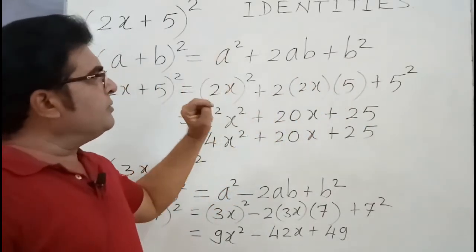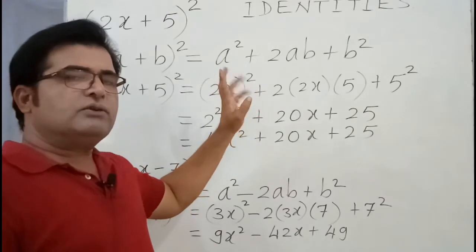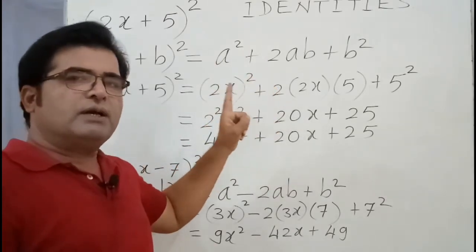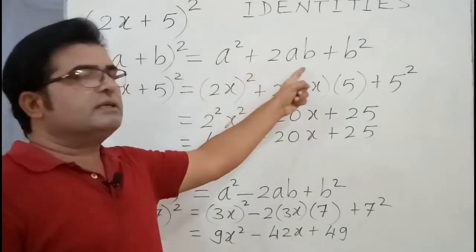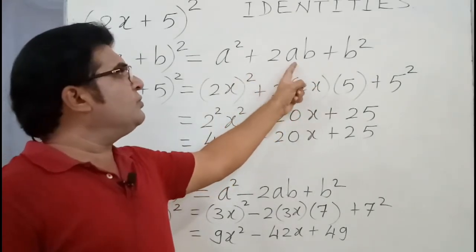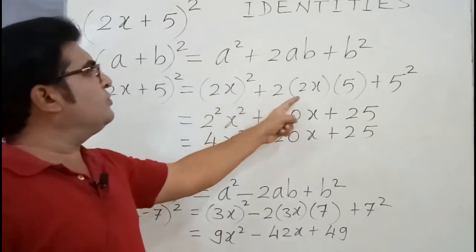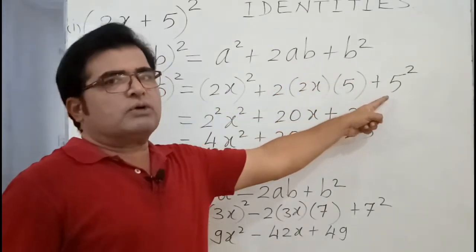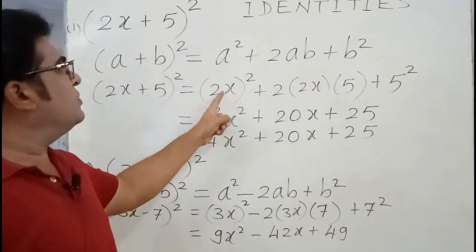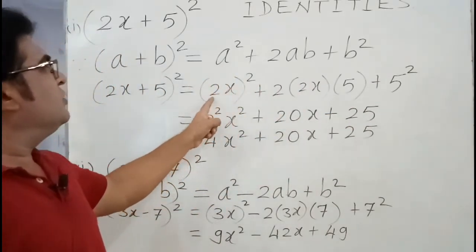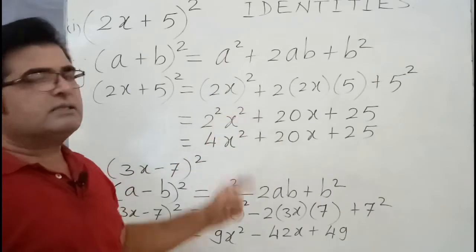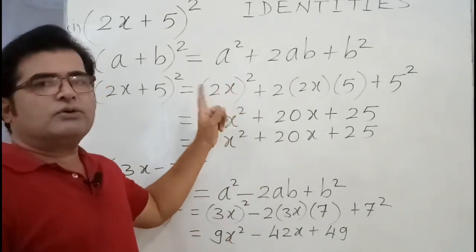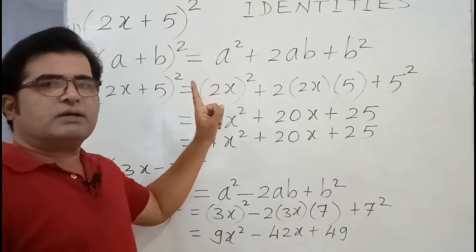Power is there, you have to write 2 in every sum because it is an identity. 2ab means 2 × a × b means 2 × 2x × 5 and b² is there so 5² is there. A² is there so (2x)². 2x is there so this bracket is necessary. If only x² is there then need not to put the bracket. Only x² can be written.